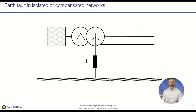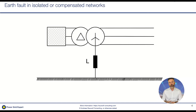Both networks have the big advantage that in case of a one-phase fault, the network can still be operated. The end customer will not know that the network has a problem, giving the grid operator the possibility to locate the fault, isolate it, clear it, and restore the network without the end customer experiencing any power failure.